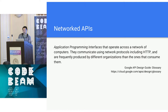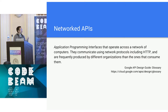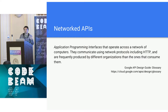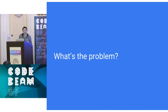When we talk about APIs, we're really talking about network APIs — application programmer interfaces that are operating across a network of computers, communicating across network protocols like HTTP, and are frequently produced by different organizations than the ones consuming them. This will also apply to internal APIs if you're in a microservice architecture.